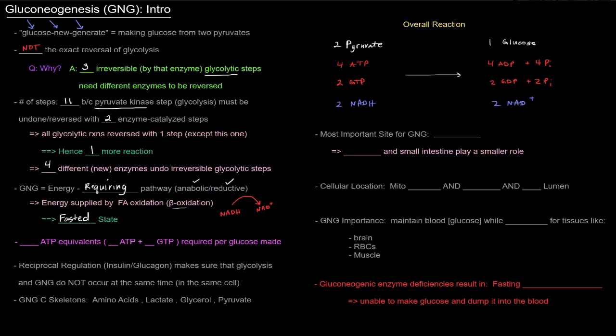As far as building a glucose, there are six ATP equivalents that are used - four in the form of ATP and two in the form of GTP. So six ATP equivalents are required to make each glucose. This is a per glucose number.